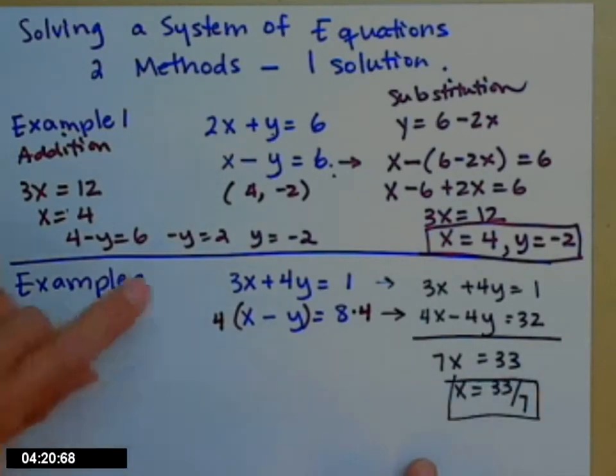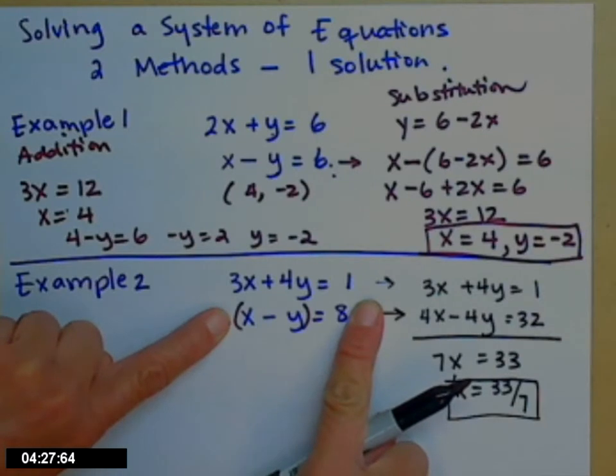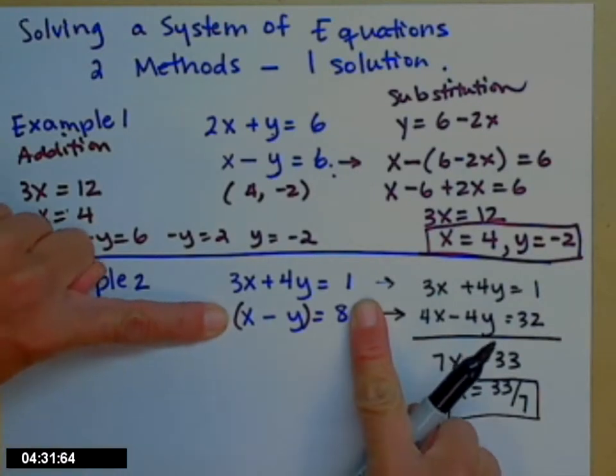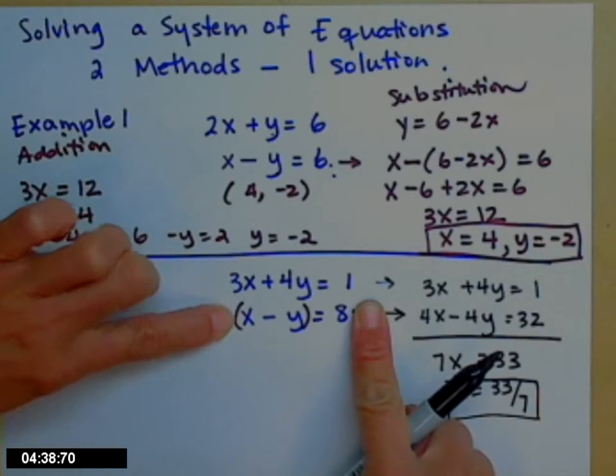Instead, I'm going to come back up here before I have the 4's. And I'm going to make the x's go away this time. And that will leave me with y's. So think about, what would you have to multiply both sides of this equation by to make the x's go away? I have a 3x up here, so I need this x to have a negative 3 in front of it.